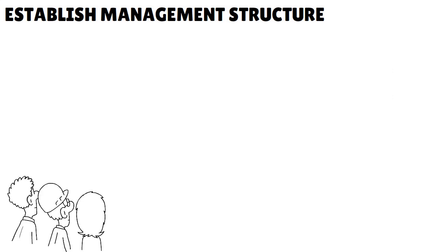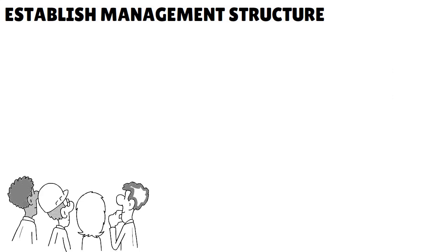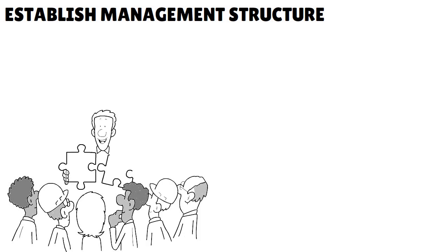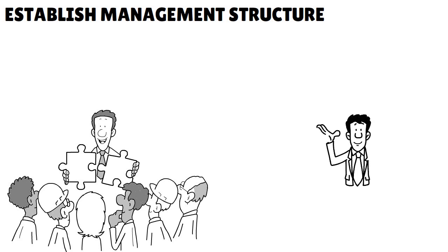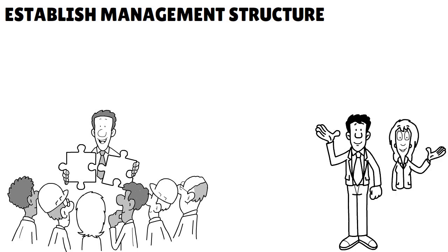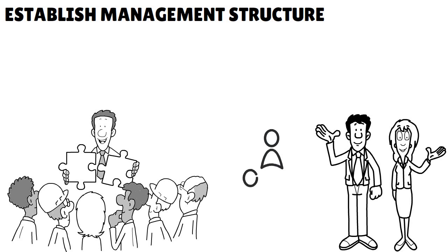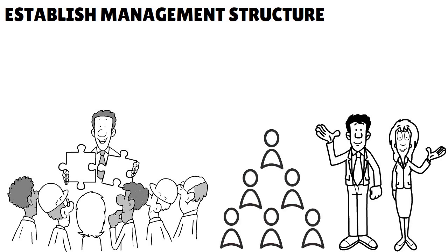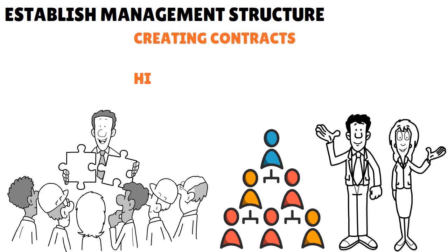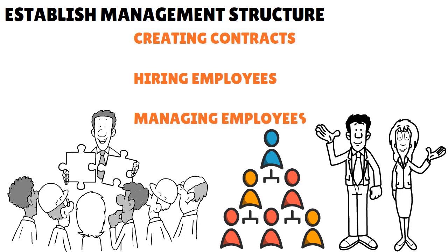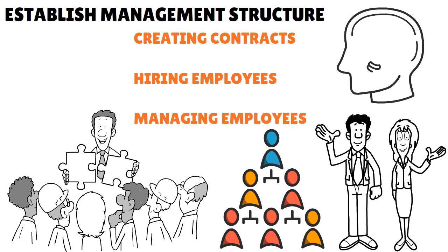Step two: establish management structure. Decide which management structure your LLC will operate under. Members will always make big-picture decisions, but day-to-day operations can either be split between members — member-managed — or handled by a manager — manager-managed. If members choose a manager-managed structure, they can elect one of the members or hire an outside manager. Common day-to-day operations include creating contracts, hiring employees, managing employees, and making decisions about business vision and business model.